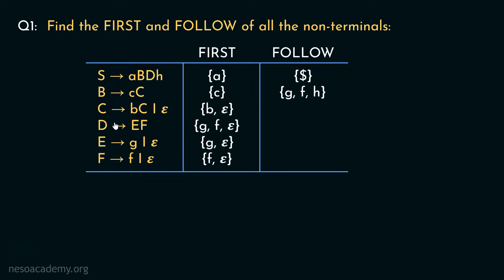Now let's figure out Follow of C. Uppercase C appears in two instances. In one case, C is the rightmost symbol of the right-hand side. Therefore, to find Follow of C, we require Follow of B, and so in Follow of C we will have all the symbols of Follow of B.